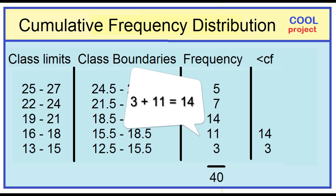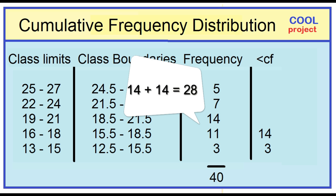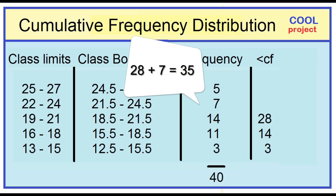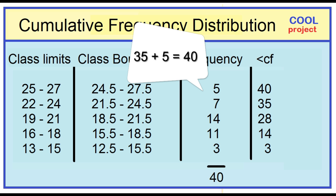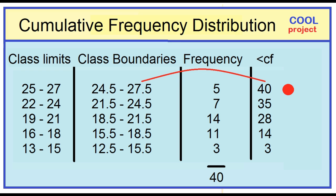3 plus 11 is 14. 14 plus 14 is 28. 28 plus 7 is 35. 35 plus 5 equals 40. This means that 40 women each had a boyfriend when they were less than 27.5 years of age.